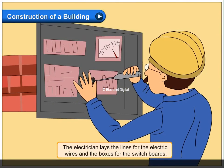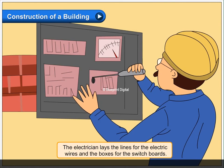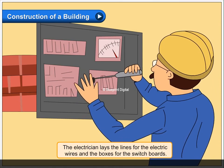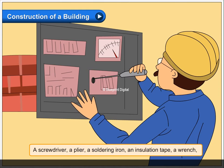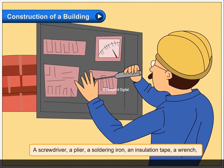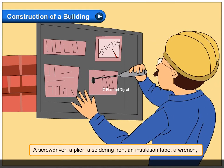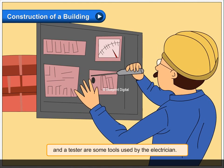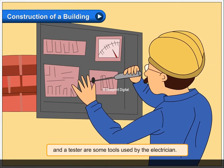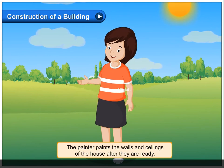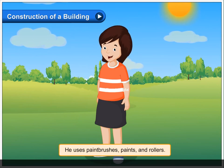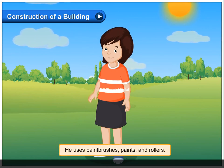The electrician lays the lines for the electric wires and the boxes for the switchboards. A screwdriver, a plier, a soldering iron, an insulation tape, a wrench and a tester are some tools used by the electrician. The painter paints the walls and ceilings of the house after they are ready. He uses paint brushes, paints and rollers.